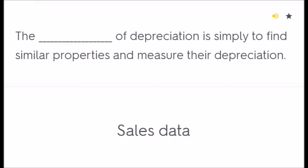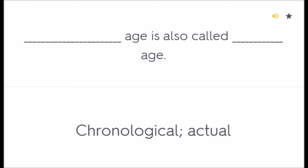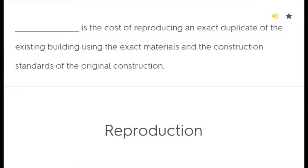The blank method of depreciation is simply to find similar properties and measure their depreciation using sales data. Blank age is also called blank age — chronological age. The blank is the cost of reproducing an exact duplicate of the existing building using the exact materials and construction standards of the original construction — reproduction cost.